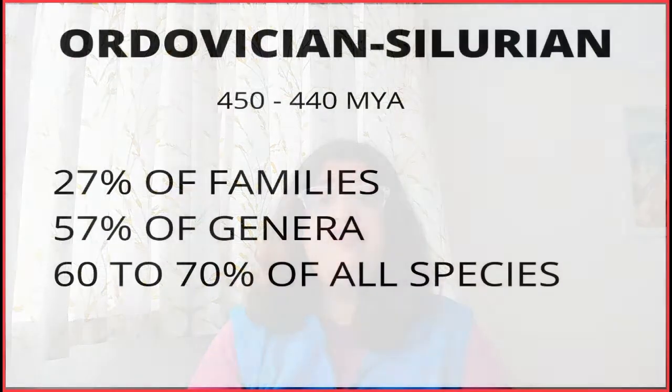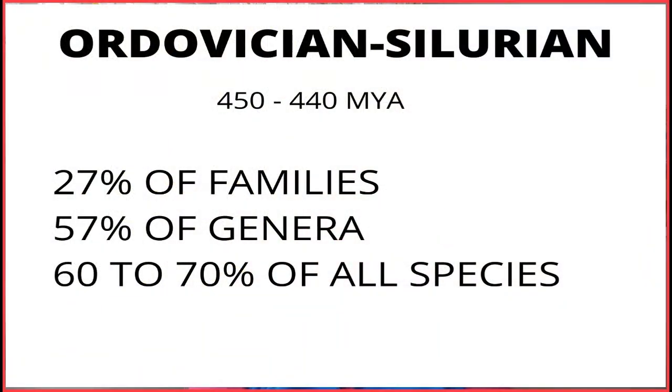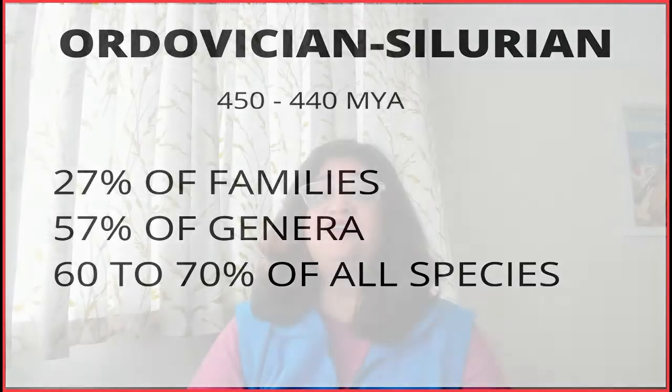Life starts on Earth, it is going about its merry way. Plants are colonizing land, and insect-like organisms are venturing out of the oceans onto land. This is when we get the first known mass extinction event, called the Ordovician-Silurian extinction event, which occurred 450 to 440 million years ago. This is the second largest of the five mass extinctions, killing off 27% of all families, 57% of all genera, and 60 to 70% of all species, most of which were in the oceans.